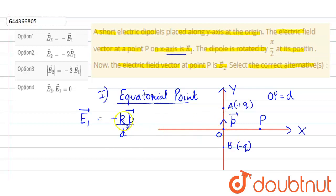Why minus sign? Because the direction of electric field intensity will be opposite to the dipole moment. This side. Right.